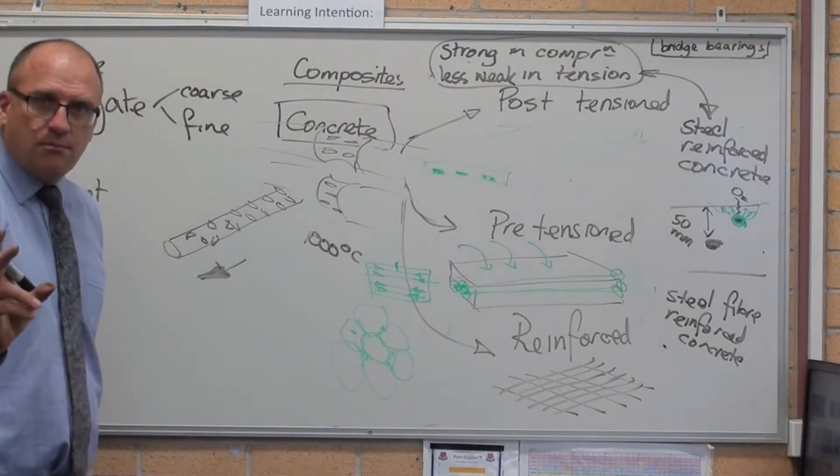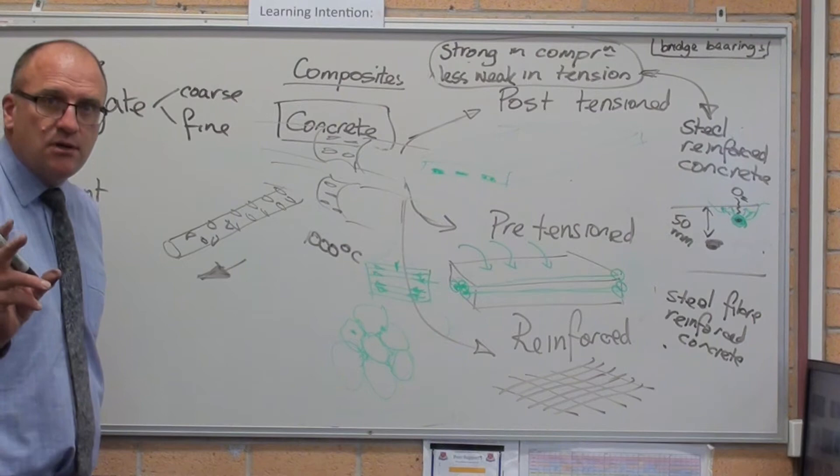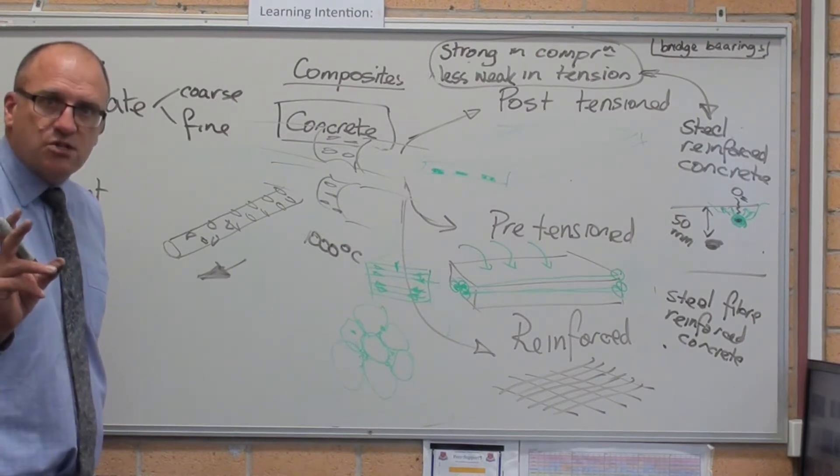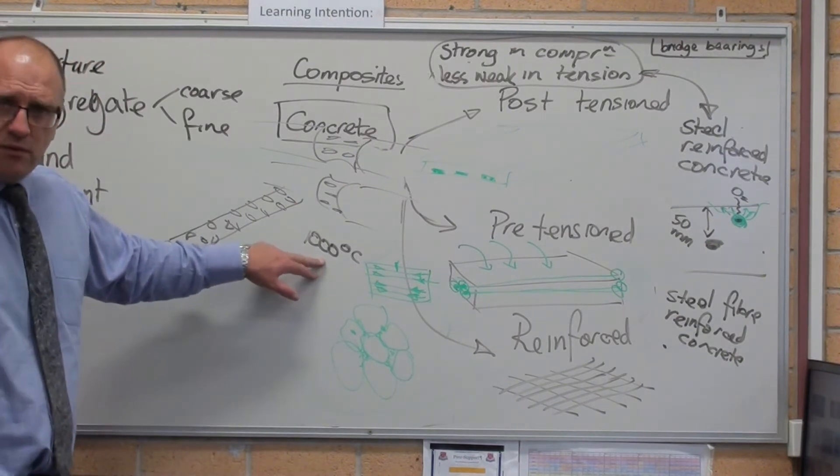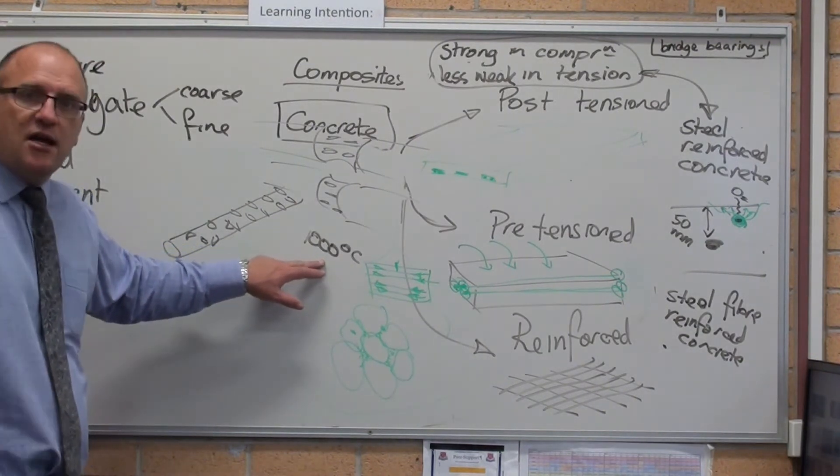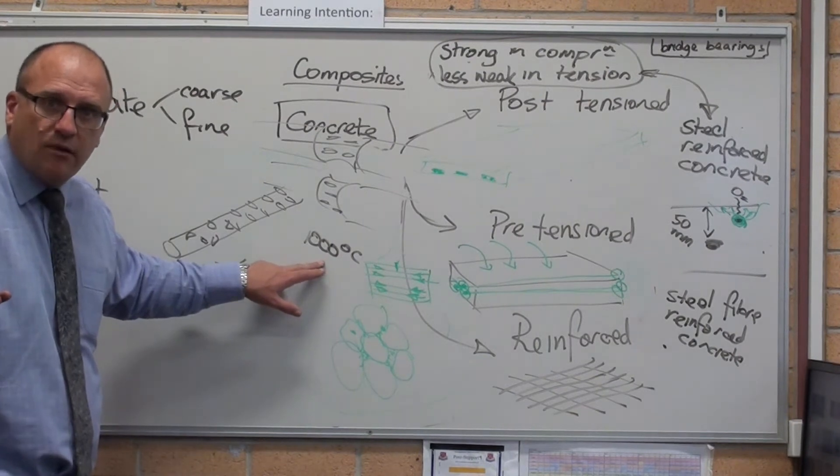The reinforcing bar is quenched and tempered. It also needs to be made as cheaply as possible. So they don't get it to a thousand degrees out of the mill, cool it down, heat it back up to a thousand degrees and quench and temper it.